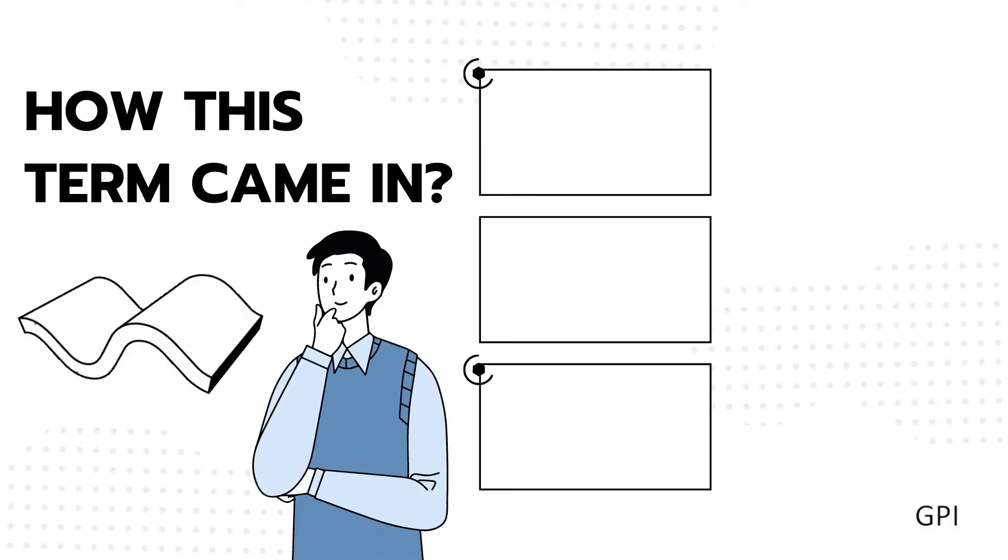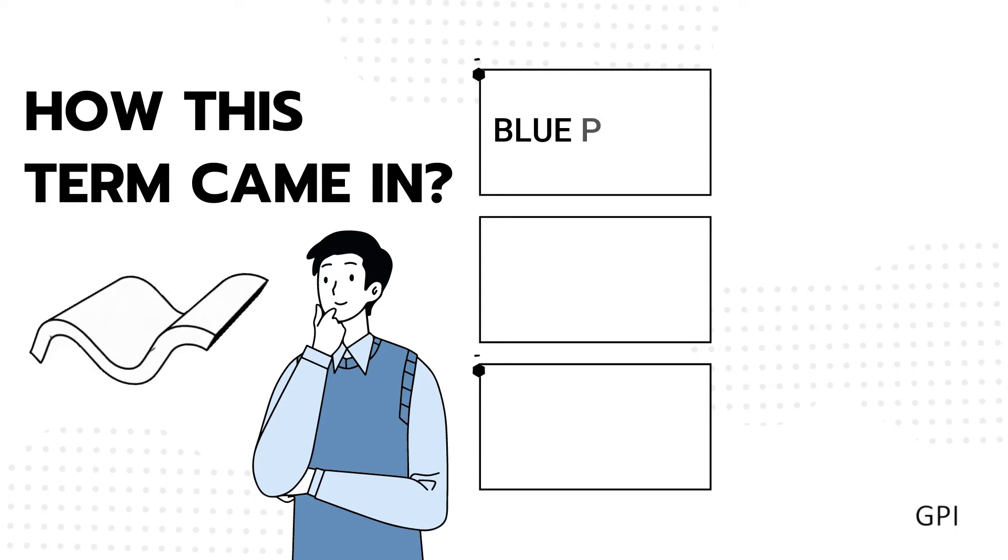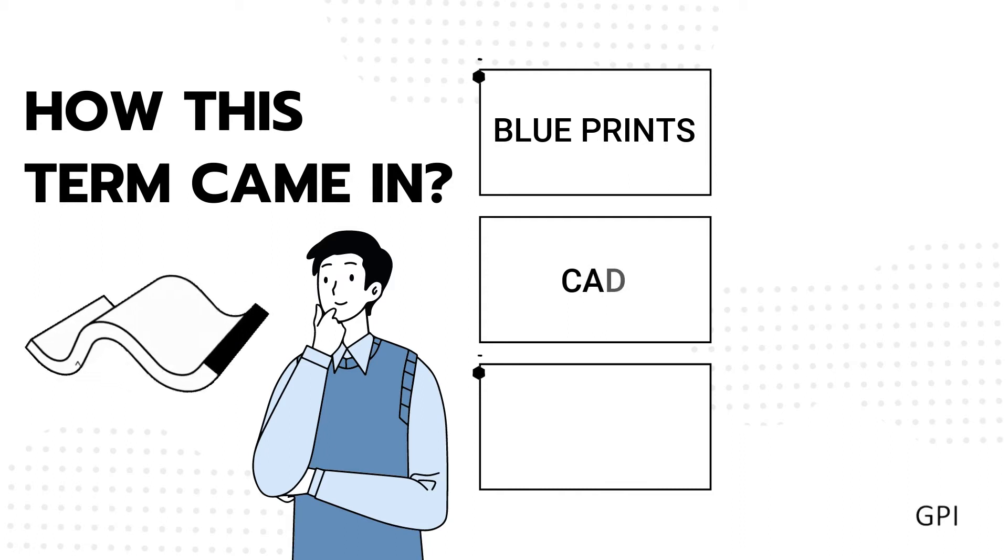So how did this term come about? In the past, blueprints and drawings were used to express information about a particular building. This 2D approach made it very difficult to visualize dimensions and requirements. Next came CAD—Computer-Aided Design—which helped drafters see the benefit of plans in a digital environment.